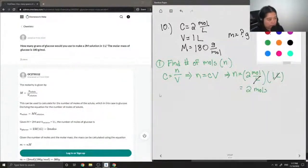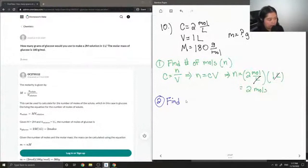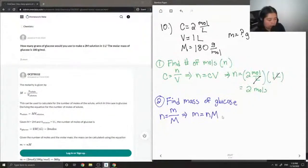So after we find the number of moles, now we can find the mass. So step 2 is simply just find the mass of glucose. And we can do this using the equation number of moles is equal to mass over molar mass. So again, I'm just going to rearrange this equation so that we're solving for mass. And it's simply just the number of moles times the molar mass.